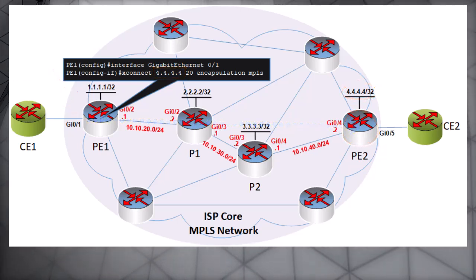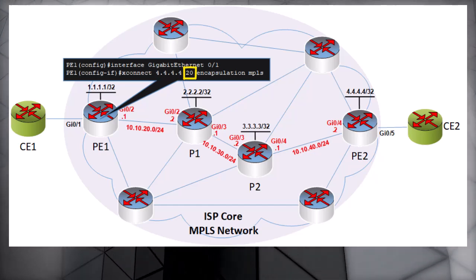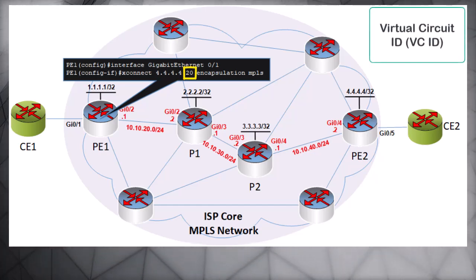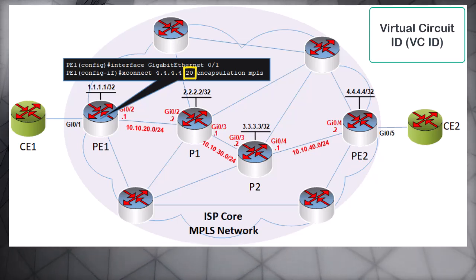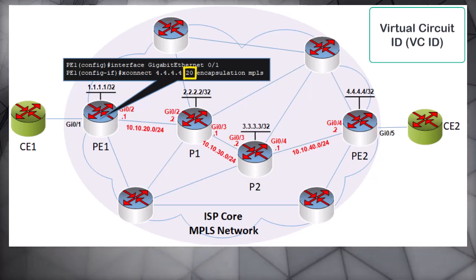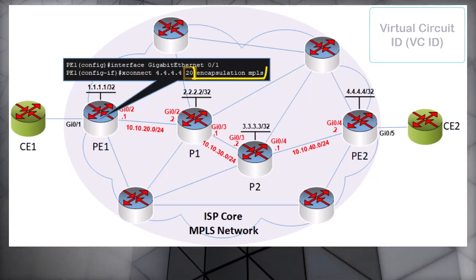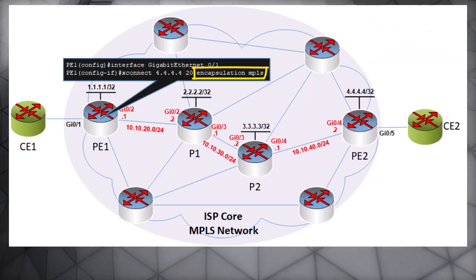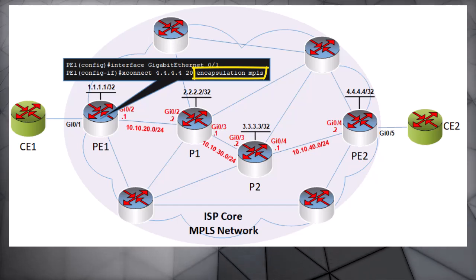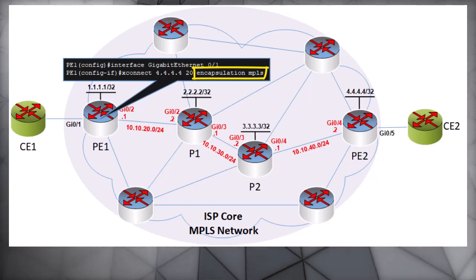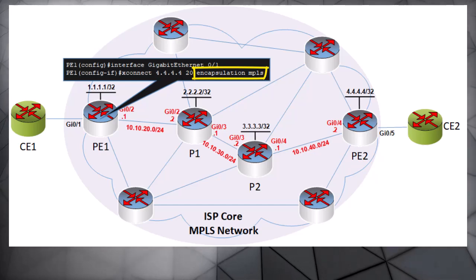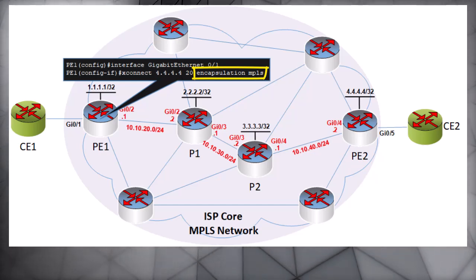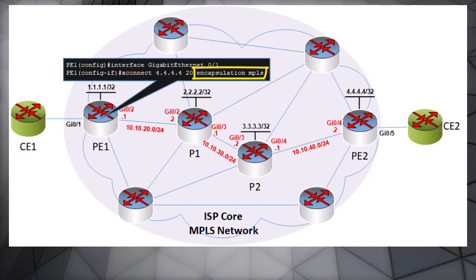Next you can see the number 20 — this is the virtual circuit ID, or VC ID. This number must be unique between the two PE endpoints being used. The rest of the command tells the router what protocol will be used for encapsulation, and in our case that protocol is MPLS. That's all you have to do on the PE1 router.